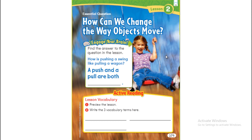How can we change the way objects move? How is pushing a swing like pulling a wagon? Pushing a swing or pulling a wagon are the same because both of them are forces. Forces means we can move an object or stop an object from moving.